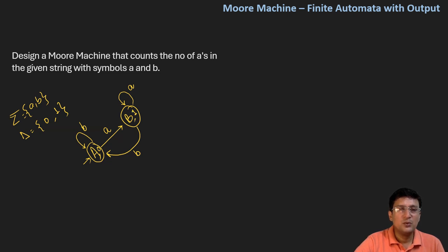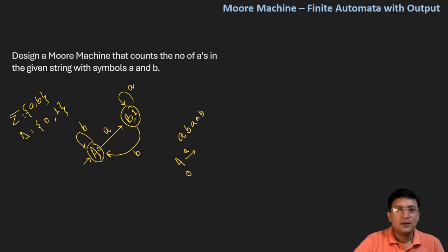So in this way, you can see that we can design the Moore machine for counting the number of A's in the given string. Let's take the string AABAB. The output should come as three because there are three A's. I am at state number A and zero is the output. If I get A, I move to state number B and one is the output. If I get B at state number B, I will move to A and zero is the output.